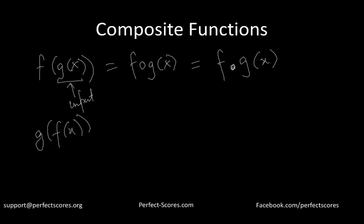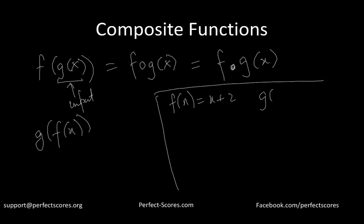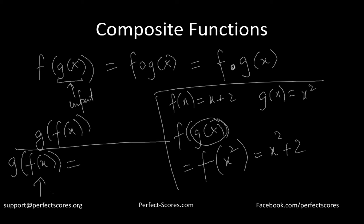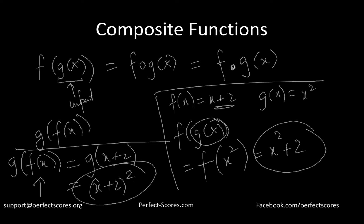Another type is g(f(x)), where f(x) is the input of g. For example, let f(x) = x + 2 and g(x) = x². Then f(g(x)): start from the inside — g(x) = x², so f(x²) = x² + 2. Now g(f(x)): f(x) = x + 2, so g(x + 2) = (x + 2)².